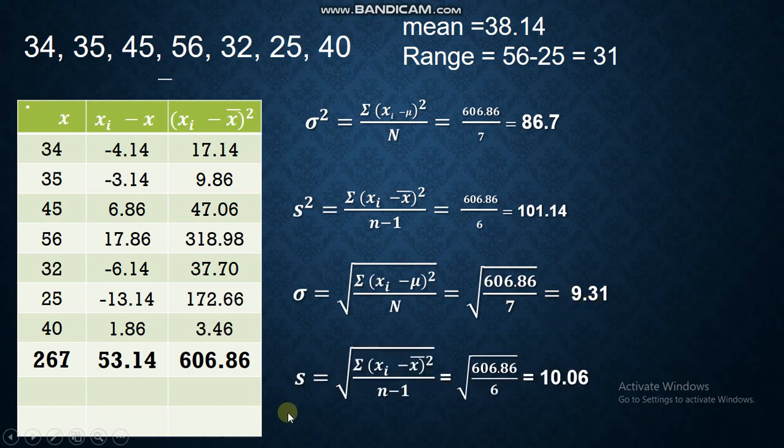And lastly, this is our standard deviation, sample standard deviation. This is the equation. You substitute directly. We have the numerator as 606.86. Why is our denominator 6? It's just n minus 1, that is 7 minus 1, which is 6. So, your answer is 10.06.